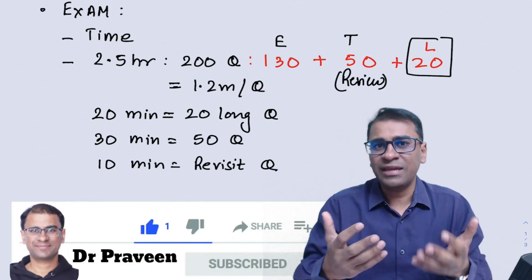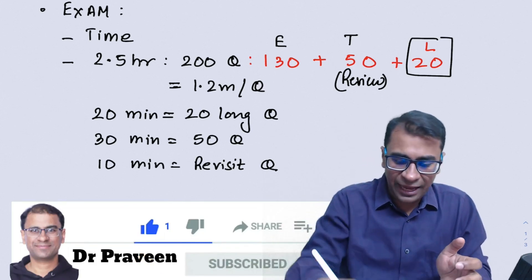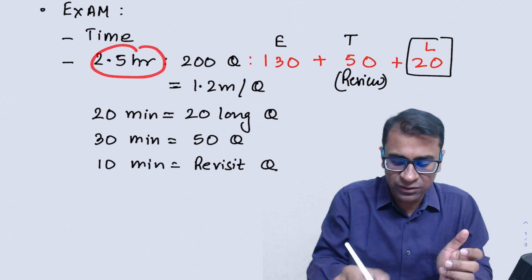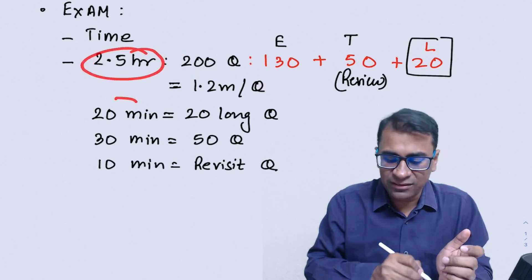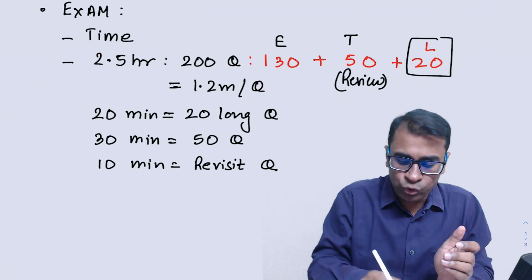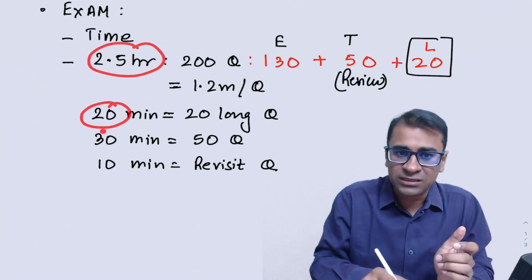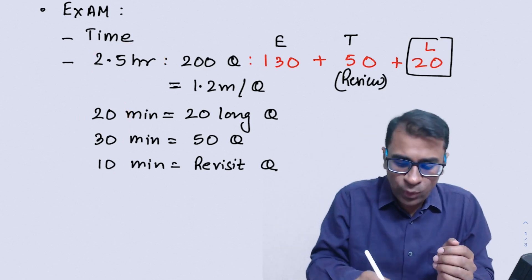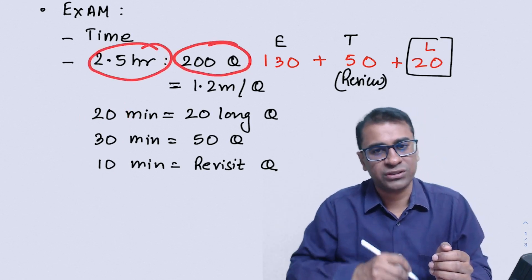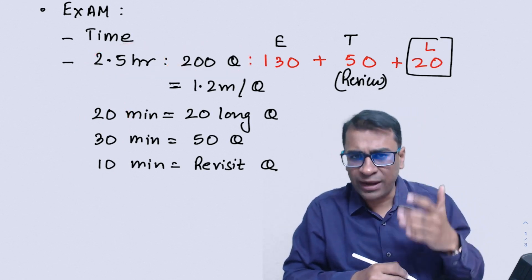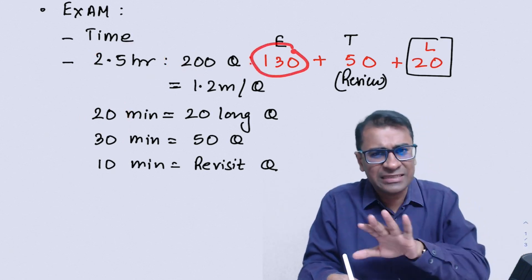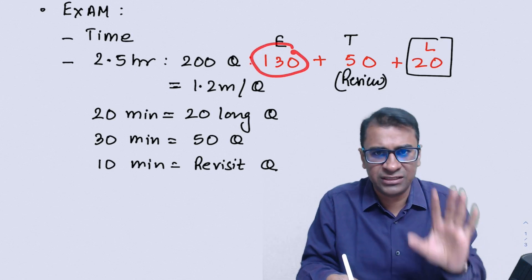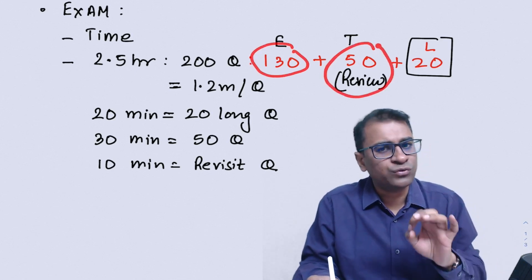So if I would be giving a NEET PG, I would dividing the entire three and a half hours to two and a half hours for 200 questions. So I'll divide this entire thing into a two and a half hours, then 20 minutes, 30 minutes and 10 minute duration. So in the two and a half hours, I have to look into 200 questions. But what my estimate looking at the last three to four years of NEET PG is 130 will be a slightly easy to moderate type of question, which is quite easy for you.